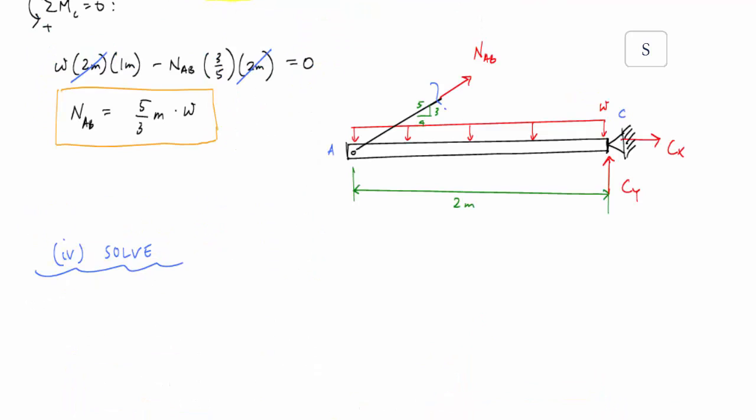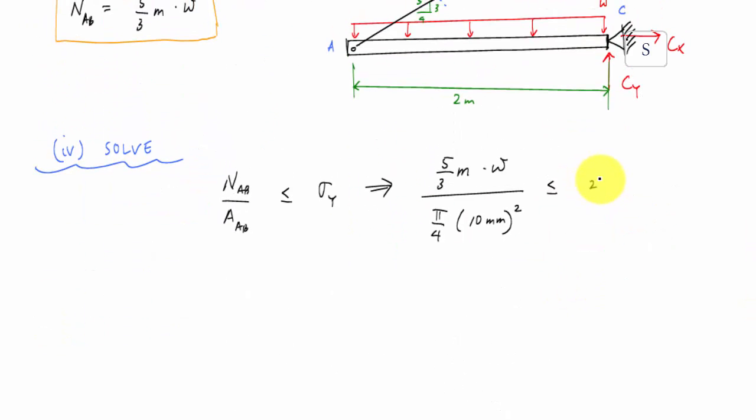So again, just taking my basic design relationship, which was this NAB over the area of AB is less than or equal to sigma Y. And if I plug some numbers into this, I will get this five thirds M times W over the area of this rod. And that area is just pi over four times the diameter of the rod, which is 10 millimeters squared less than or equal to my allowable stress, which for yielding was 250 mega pascals. And it's also nice to know if you know this, and if not, you should prove this to yourself. This is the same as 250 newtons per millimeter squared.